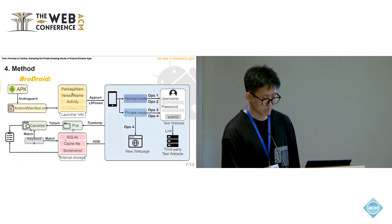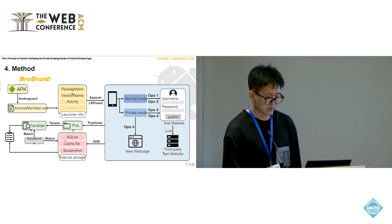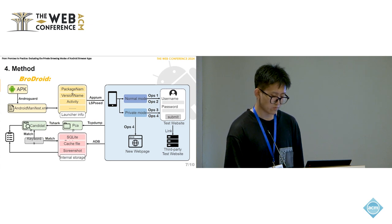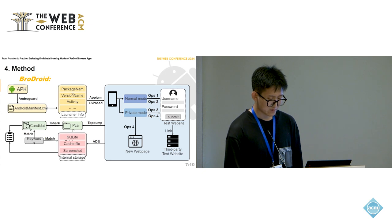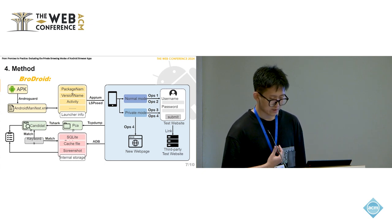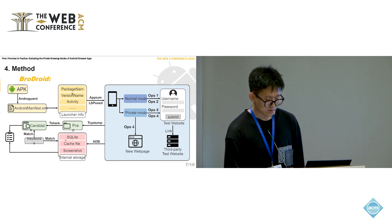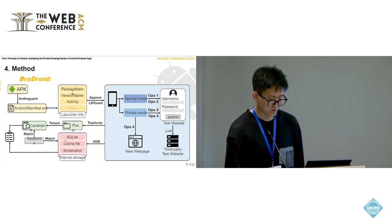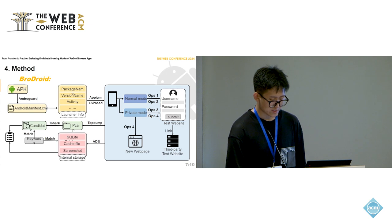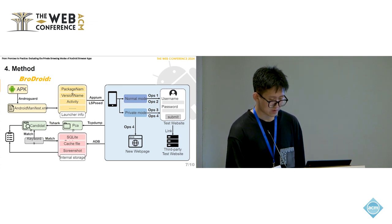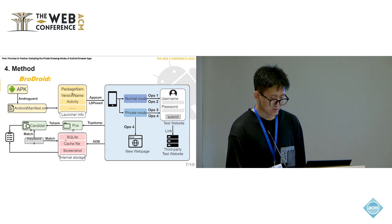The biggest challenge in implementing an automated framework is browsing automation, as the UI layout of different mobile apps varies widely from browser to browser. To successfully visit test websites in private mode automatically, we need to locate the UI components of the browser to accomplish at least two tasks: launching private browsing and accessing the target website. Because browser app UI layouts are diverse, we propose a heuristic solution to automate this process. In the end, we defined four key operations to get the browser to visit the target website. Through these four operations, all test modes for the six predefined rules can be realized.